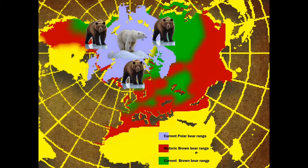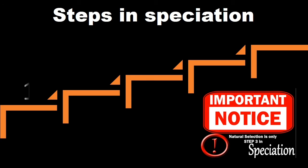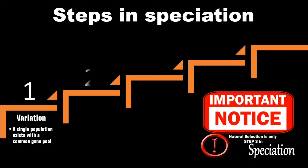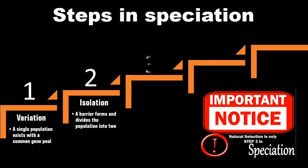Over time, as the ice started shrinking, the environment in which the polar bears could have survived also started shrinking. So there used to be a lot more variation within the populations, then isolation started taking place due to environmental changes. The environment started putting pressure on the individuals, and this then led to the process of natural selection taking place.